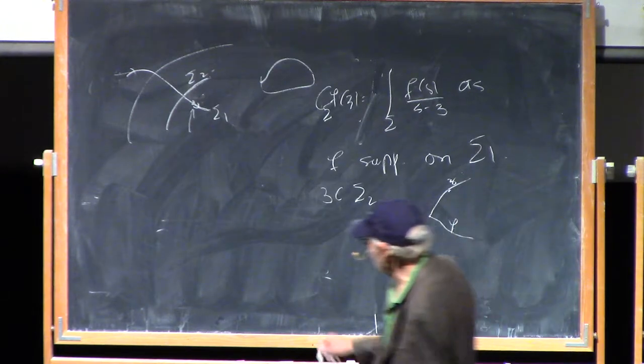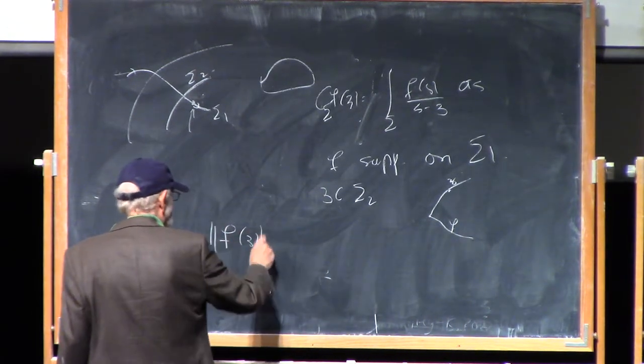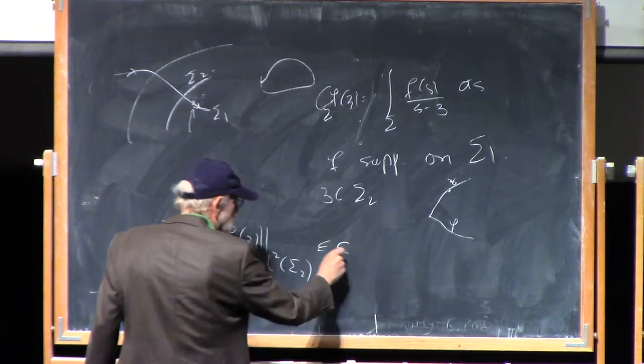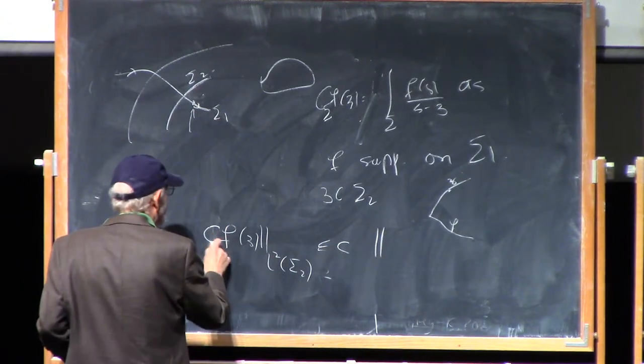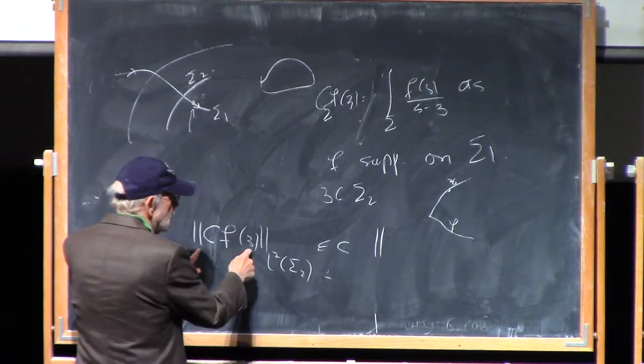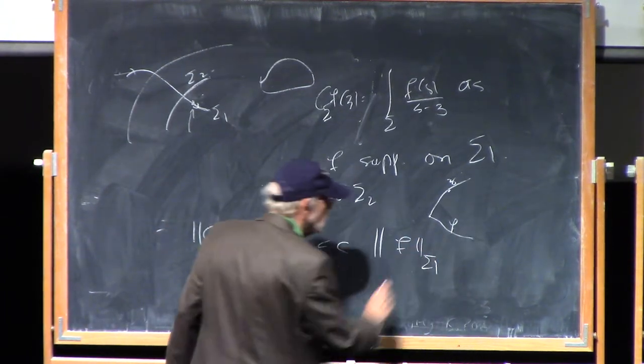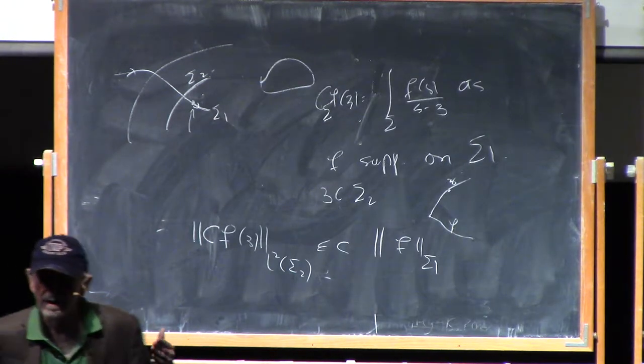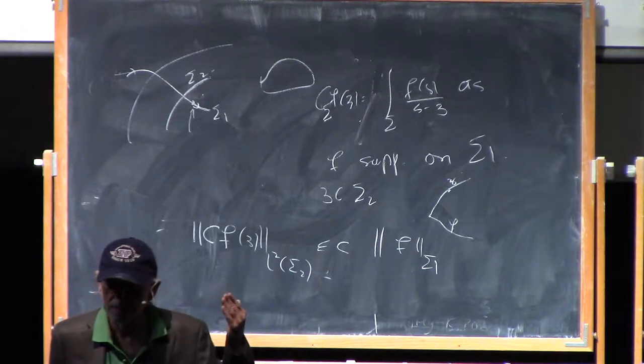If this operator there is going to be bounded in Lp on this contour, we would certainly need to know that if I look at f of z on L2 on sigma 2, this should be bounded, or this cf on sigma 2 should be bounded by f on sigma 1. That would be a consequence of my hope that the operator c is, in fact, bounded on the whole contour.